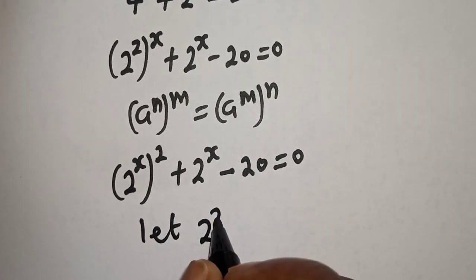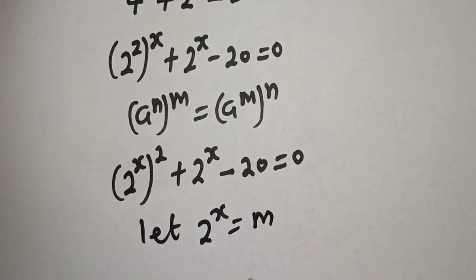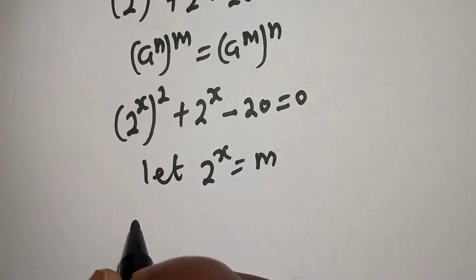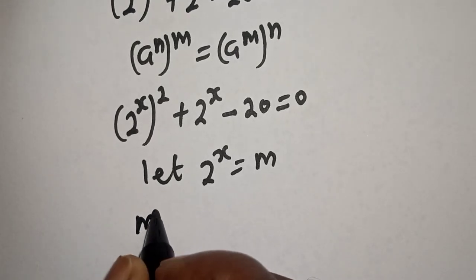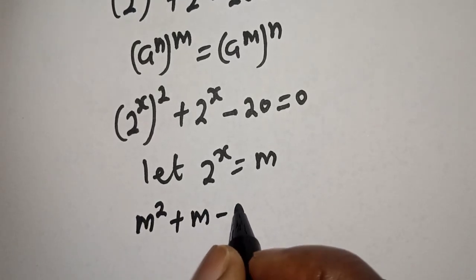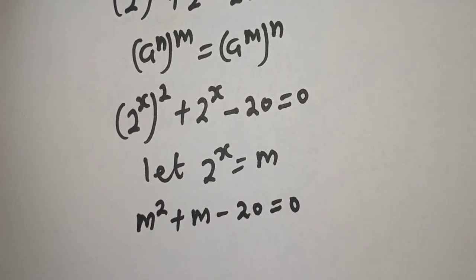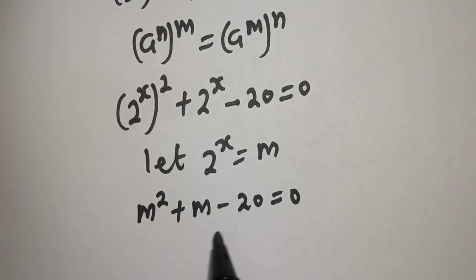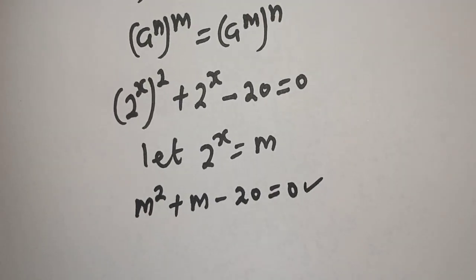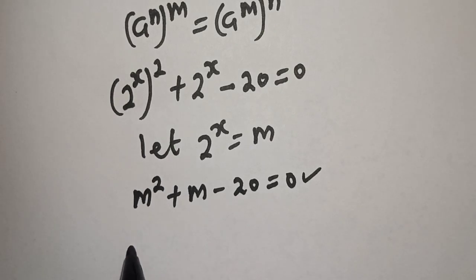Let 2 raised to power s equal to m. So this becomes m squared plus m minus 20 is equal to 0. This is a quadratic equation which can be solved using the quadratic general formula.